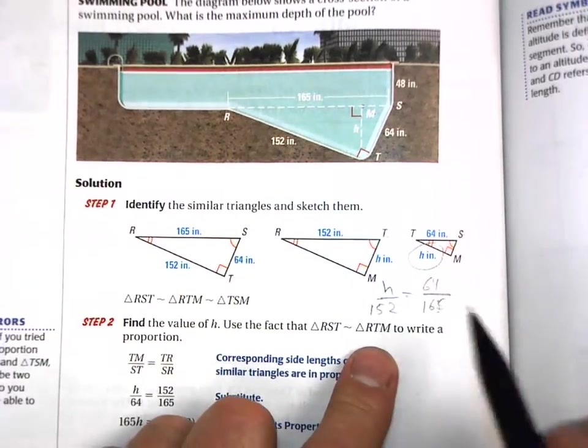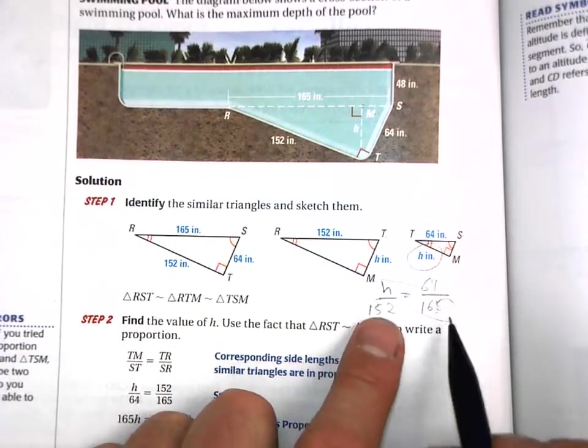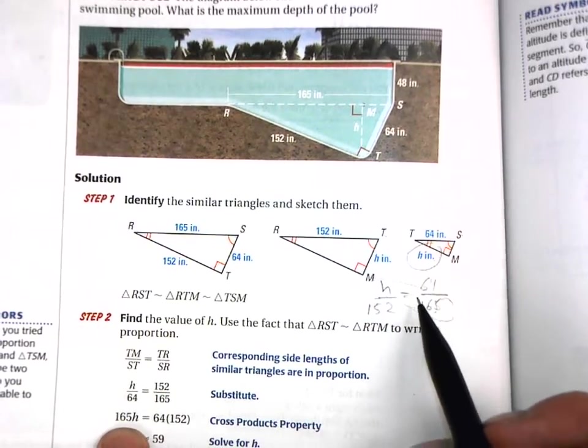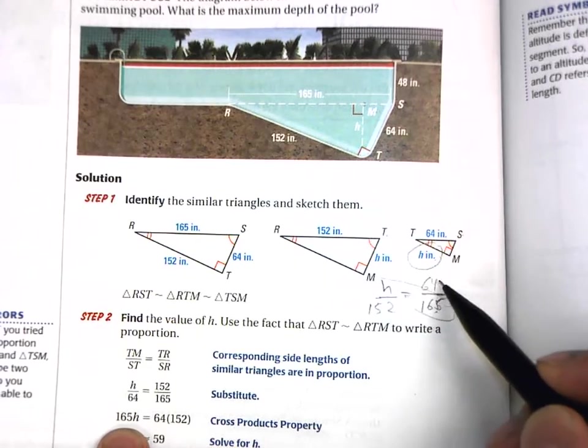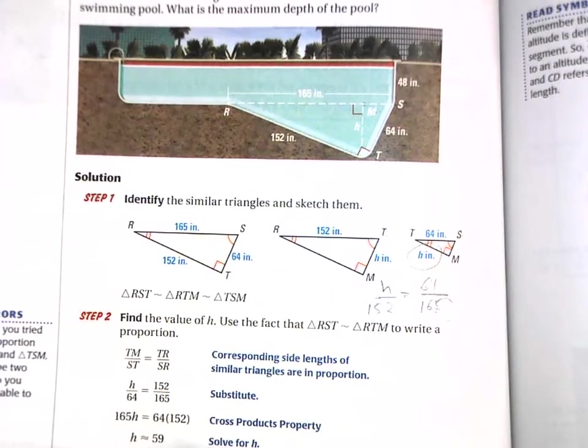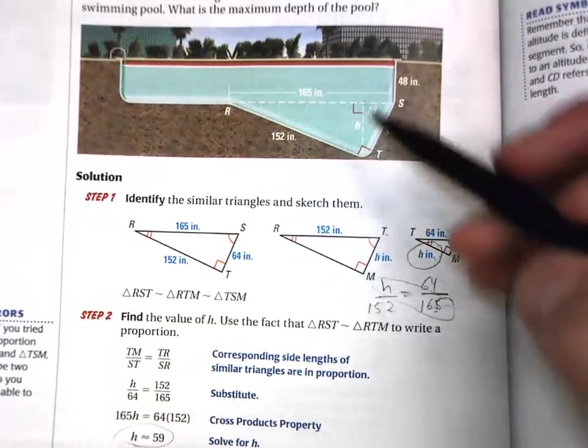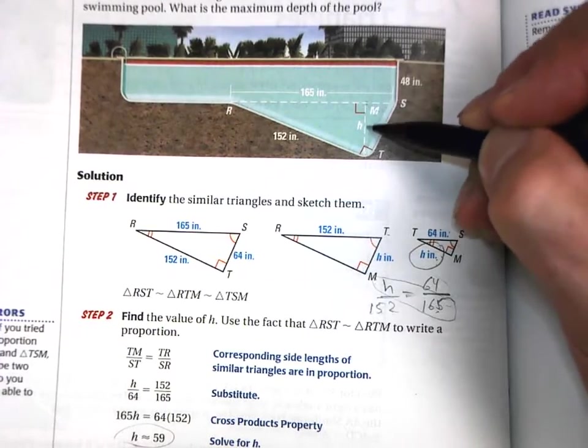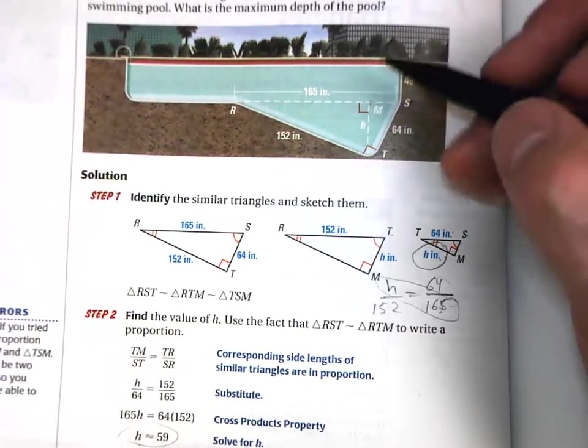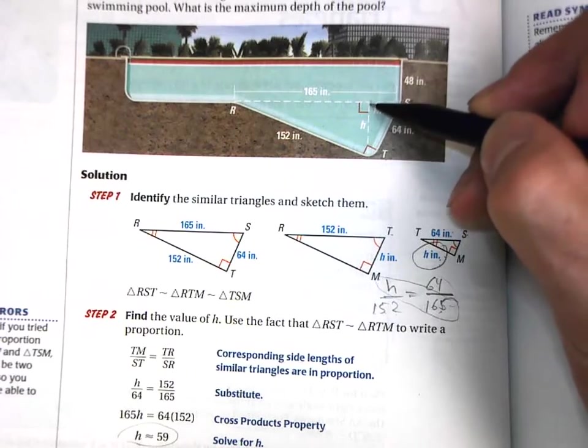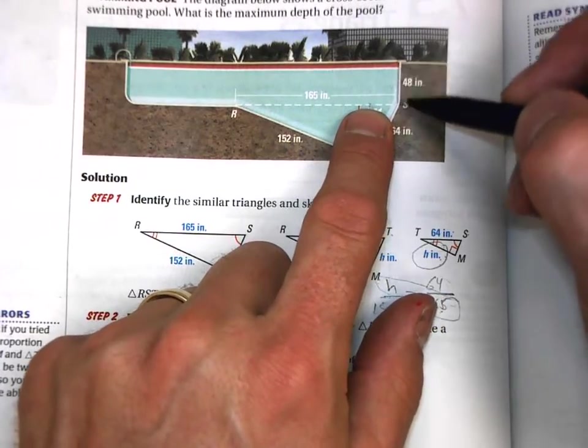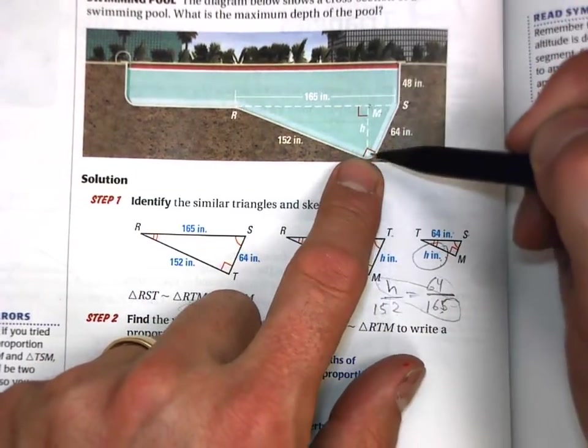So there's my proportion. And now I can solve it by doing cross multiplication. So 165 times H equals 152 times 64. And then I divide both sides by 165. And the answer is H equals approximately 59. So this is approximately 59 inches. So this length here is 59 inches, and plus you'd add also the 48 inches on top there to get the entire depth of your pool.